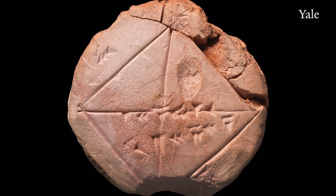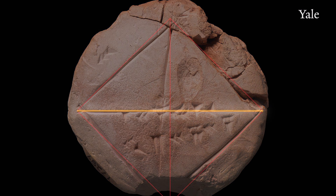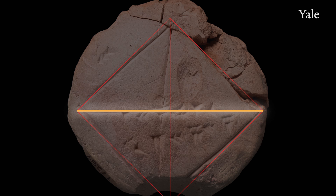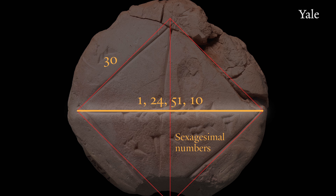The exercise given here was to calculate the length of the hypotenuse. A number is given on one of the sides — 30 — written in the sexagesimal system. Two numbers are written across the hypotenuse: an approximation of the square root of 2, and another is an approximation of the inverse of the square root of 2.